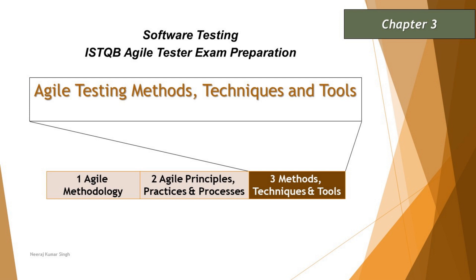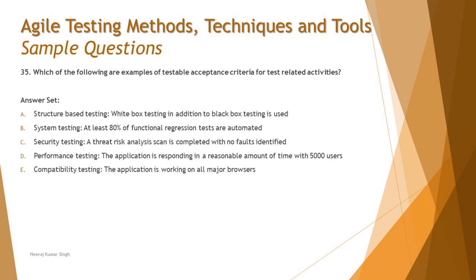Question number 35 says: which of the following are examples of testable acceptance criteria for test-related activities? Here again, everything depends on the given options, and it's very important to read the options very carefully before concluding on the right answer. They're talking about acceptance criteria — all they're asking is to check your capability on reviewing an acceptance criterion.